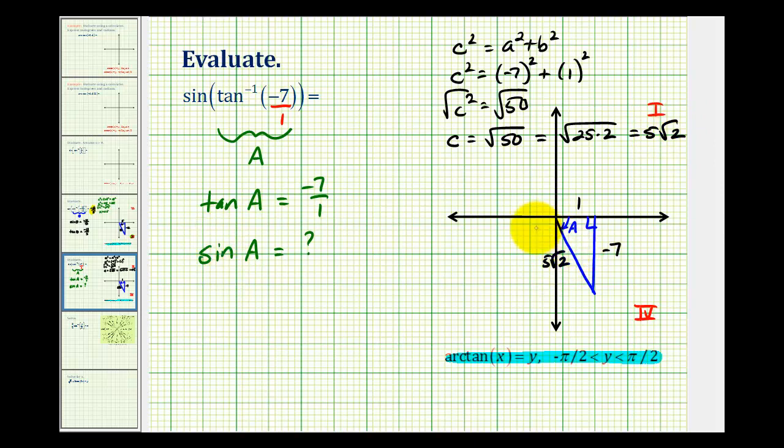Now that we have our reference triangle, we can determine the sine of angle A. The sine of angle A is the ratio of the length of the opposite side to the length of the hypotenuse, so the sine of angle A will be negative seven over five square root two.